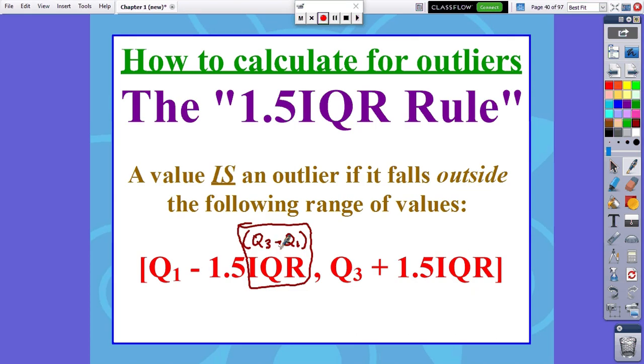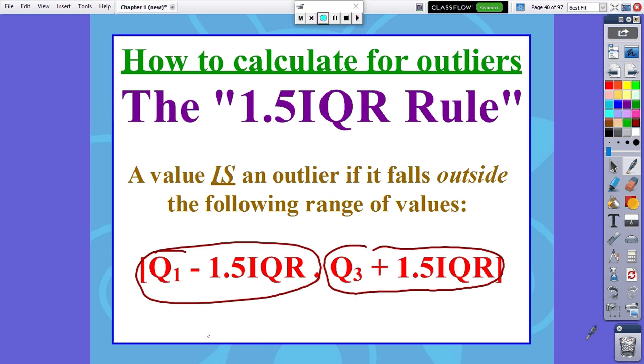Remember, an IQR was the difference of the third quartile and the first quartile. When we say IQR, we're really saying what's how much spread is there in the middle 50% of the data? We're going to take that number, multiply it by 1.5, and subtract that value from Q1. We're also going to take that 1.5 IQR value and add it on to Q3. If we have any values that are smaller than Q1 minus 1.5 IQR, or any value that's larger than Q3 plus 1.5 IQR, then we're going to consider those values outliers.